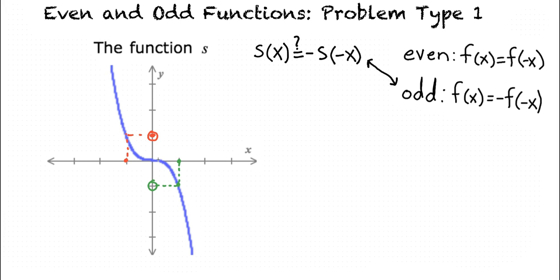We can tell that this is true for all values of x in the domain because the graph has rotational symmetry around the origin. Meaning, if we rotate it 180 degrees around the origin, it would look the same.